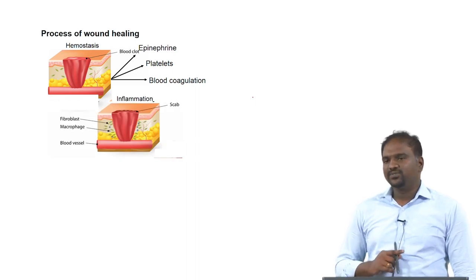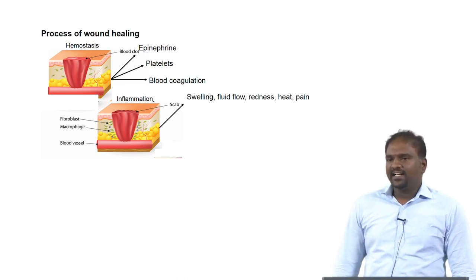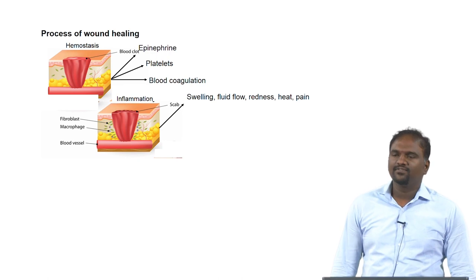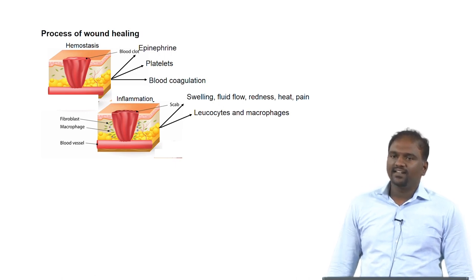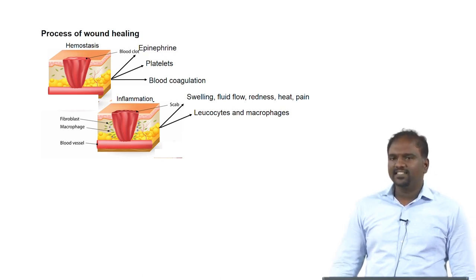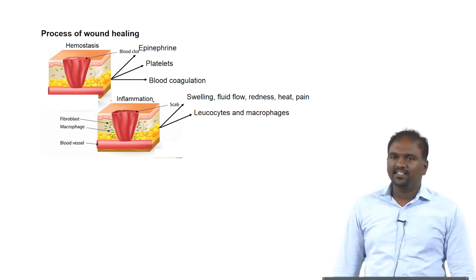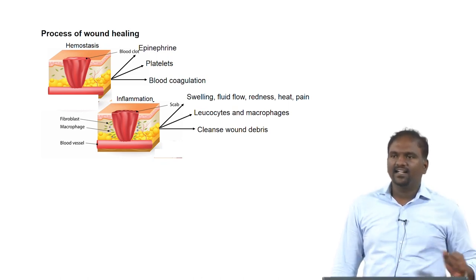The next step after hemostasis is inflammation. Once the blood starts coagulating, swelling and other things will happen because of inflammation. During swelling it also produces heat, fluid flow will be more, and obviously pain will be present. The defense system also plays an important role. When there is a wound, foreign particles will try to invade into the body — leukocytes and macrophages will start developing at that particular site. The leukocytes will be replaced by macrophages, which will clean the debris of the wound.